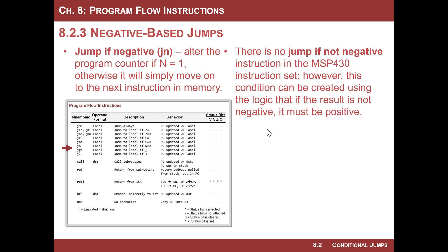What's interesting about this instruction is that there's no Jump If Not Negative. You only have one instruction, and in this example we'll see that you actually don't need the other one. Since everything is jump if N equals 1 or jump if N equals 0, you can just create the logic to do whatever, but you have to think about it a little more — as opposed to Jump If Carry and Jump Not If Carry, which has two instructions. We only have one here.